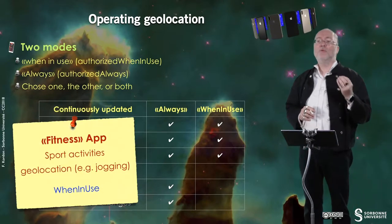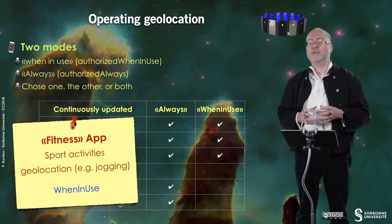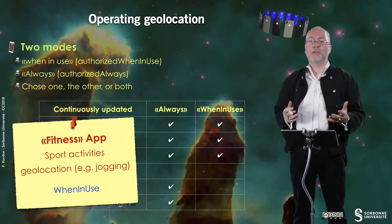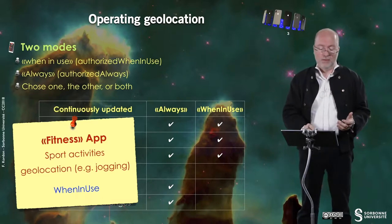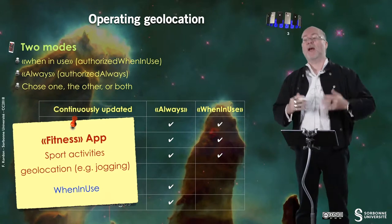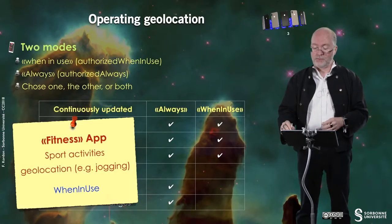When developing an application, you have to choose which mode. For example, if you want to propose a fitness application for doing sports, it's interesting to have it operating 'when in use' — imagine you start your jogging with your device on your arm, start the application, do the running, and when you finish you see your scores. Then you stop the application. It's not necessary to go further.